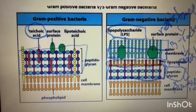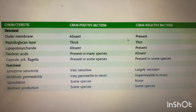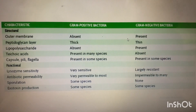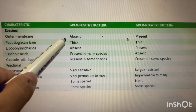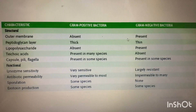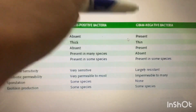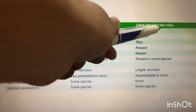Now looking at a comparison table: in gram-positive bacteria an outer membrane is not present, while in gram-negative bacteria an outer membrane is present. The peptidoglycan layer is thick in gram-positive bacteria but thin in gram-negative bacteria. Lipopolysaccharide is absent in gram-positive bacteria but present in gram-negative bacteria. Teichoic acids are present in gram-positive bacteria but absent in gram-negative bacteria.